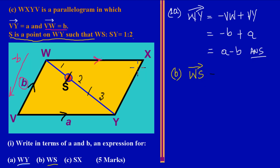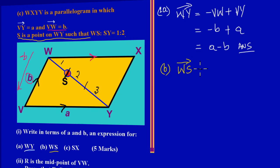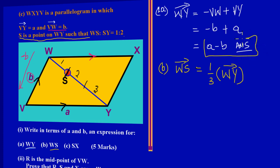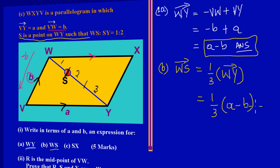By substitution, since we found WY = a − b in part A, we can say WS = one-third of (a − b). That is our final expression for the vector WS.